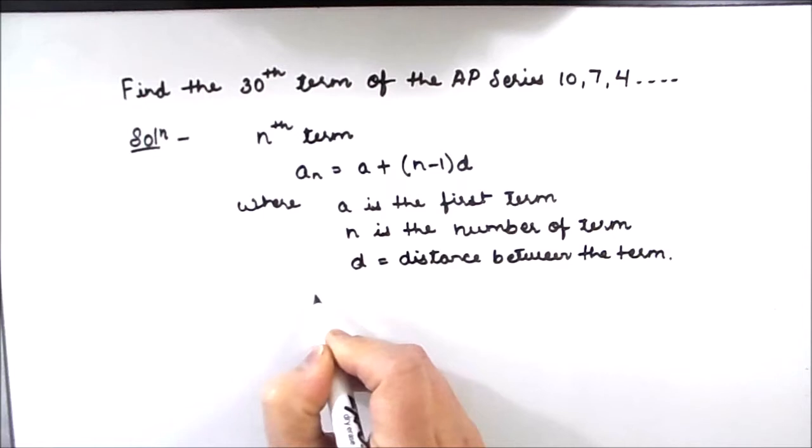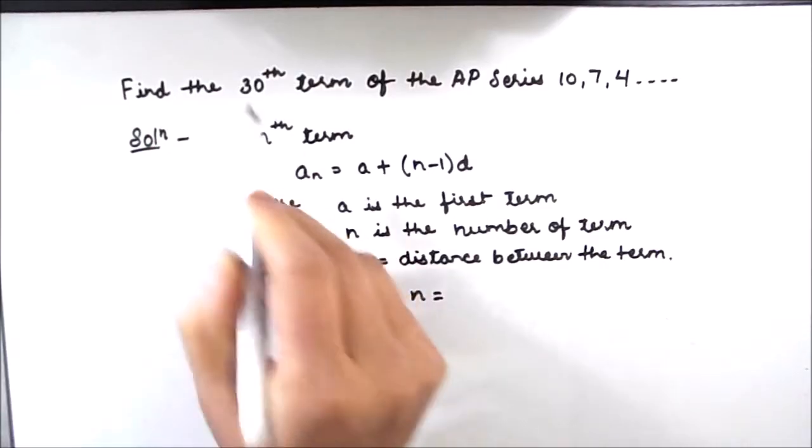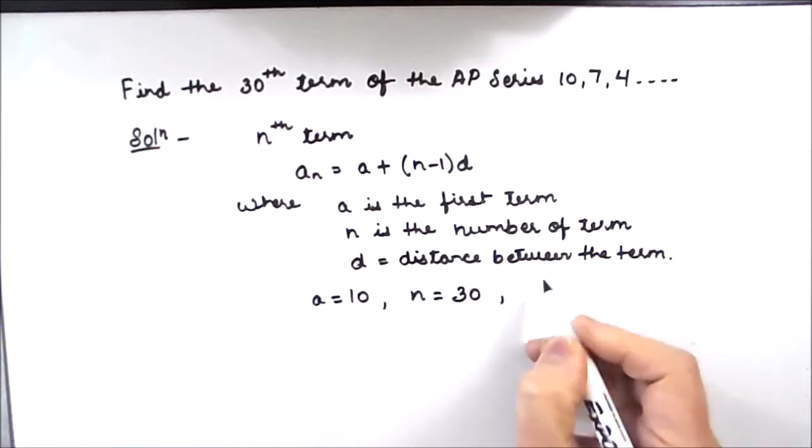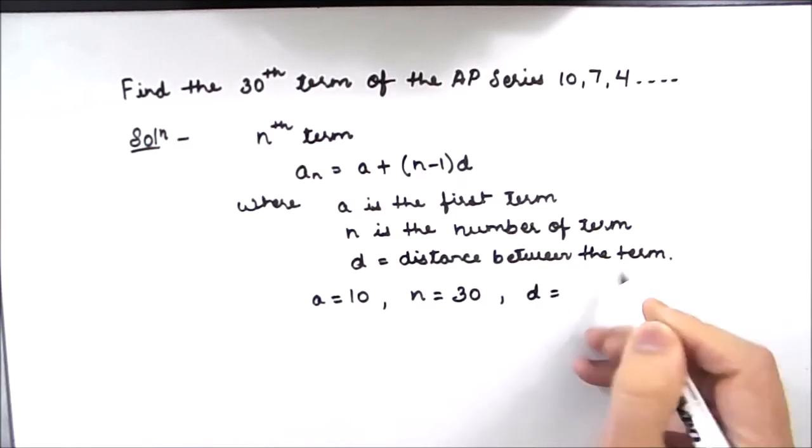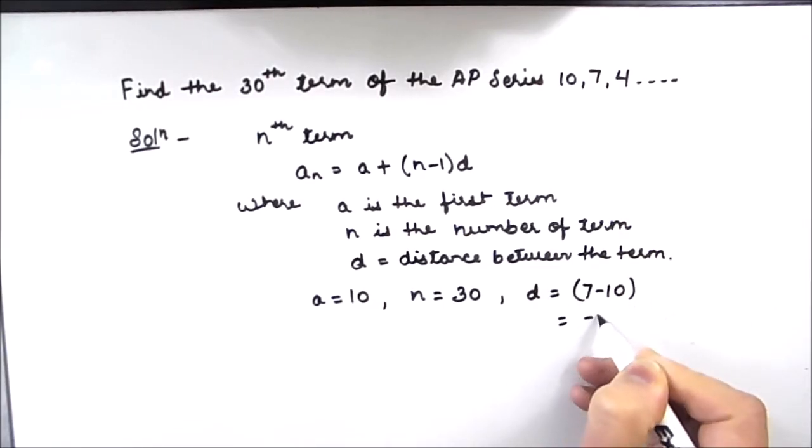So here our first term a is equal to 10. N is given as 30th term, so we need to find the value of the 30th term, so n will be 30. And d is the distance between the two terms which we can find out: 7 minus 10, which is equal to negative 3.